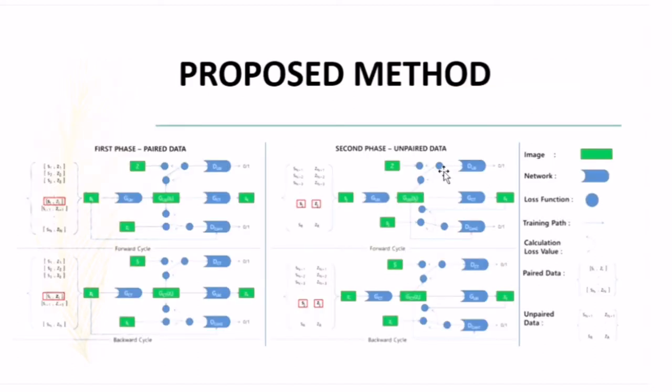Now we will go to our proposed method. In our proposed method, we use four cycles because we will divide the data into paired data and unpaired data. The first cycle is for the paired data, the second cycle is for the unpaired data, and each cycle consists of two cycles: forward and backward. The same with the second, also forward and backward. Here we can say S is the patient image, Z is the label data.